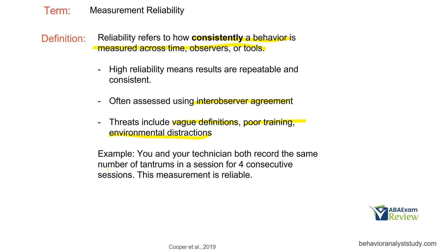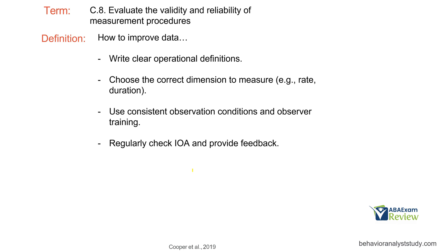Reliability example: you and your technician both record the same number of tantrums in a session across consecutive sessions. One, we have IOA; but two, it's reliable because we're recording that same thing over and over again — we're being very consistent. So how can we improve data? Write clear operational definitions — this is where it starts and where topography really comes into play. Choose the correct dimension to measure for what you're trying to achieve: are you trying to achieve an increase in count, or are you looking for something more time-based? Use consistent observation conditions and observer training. Always check inter-observer agreement and provide feedback on data collection.